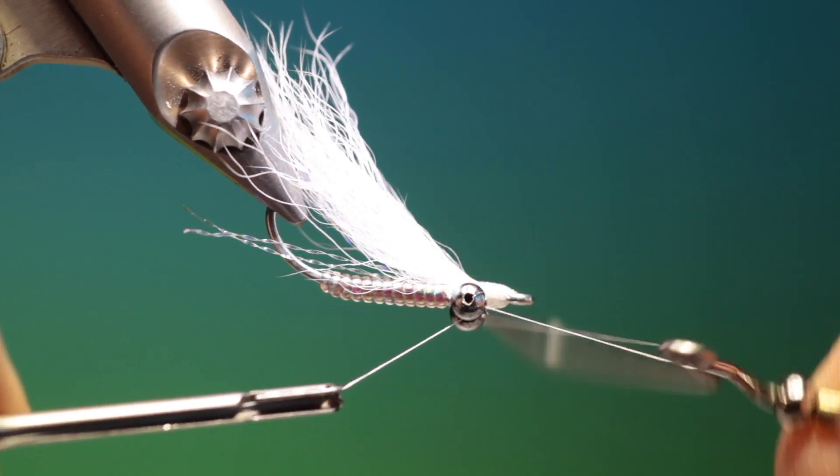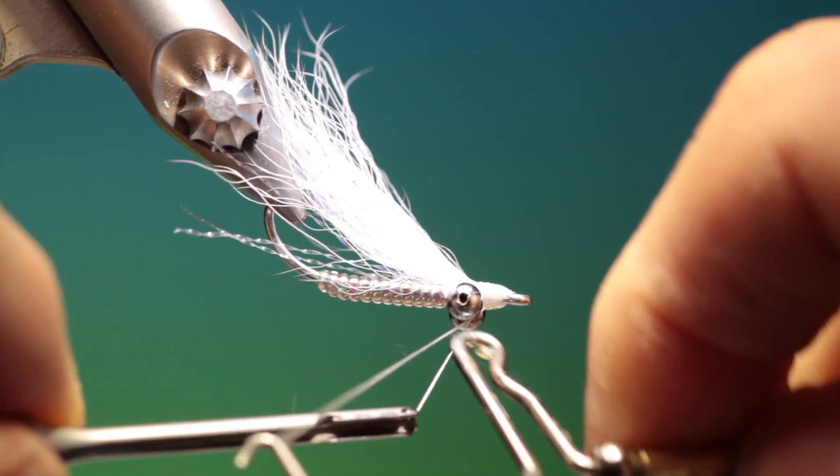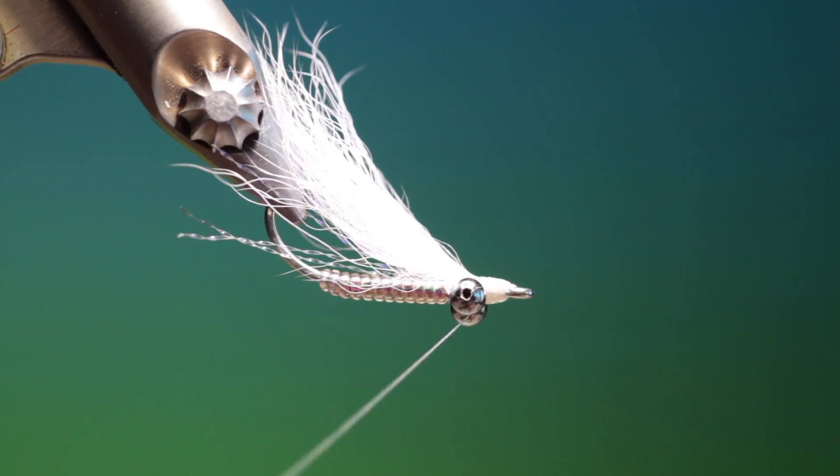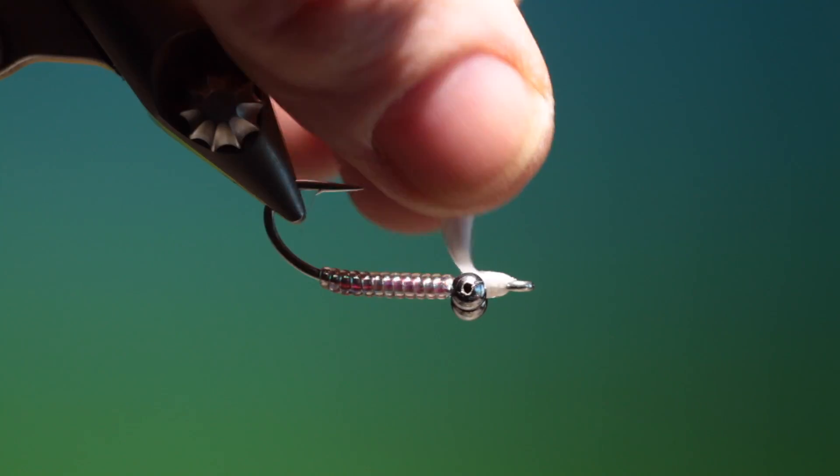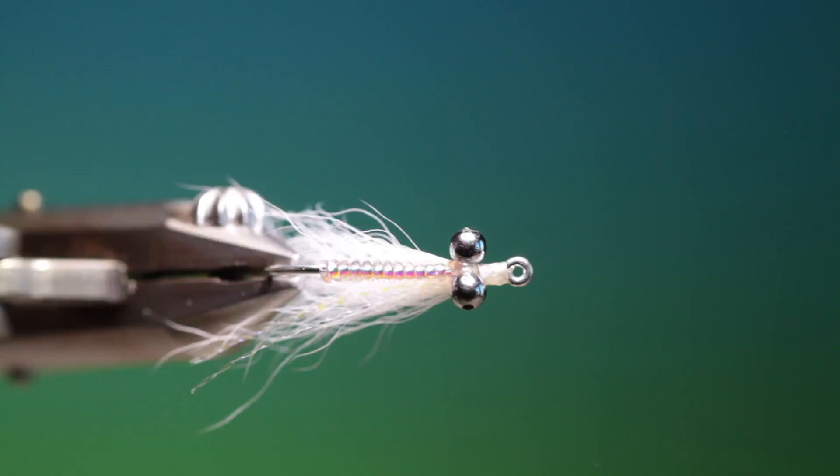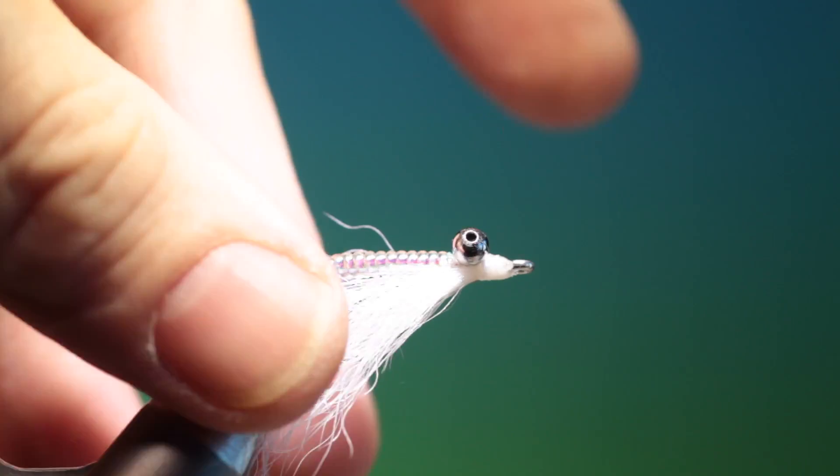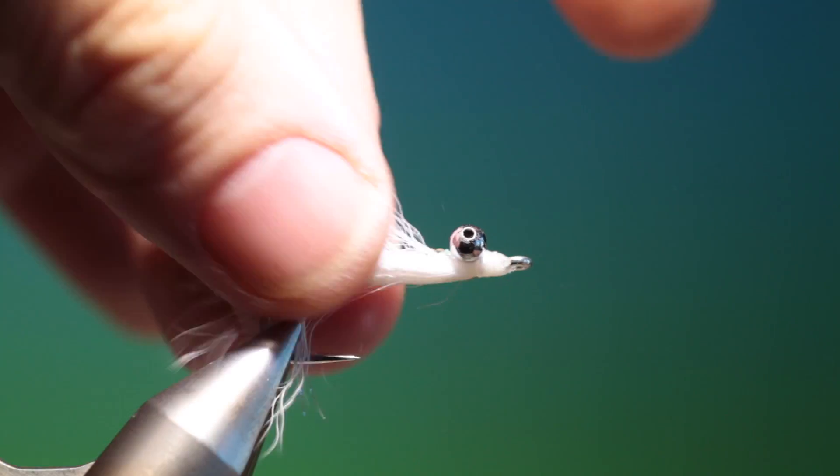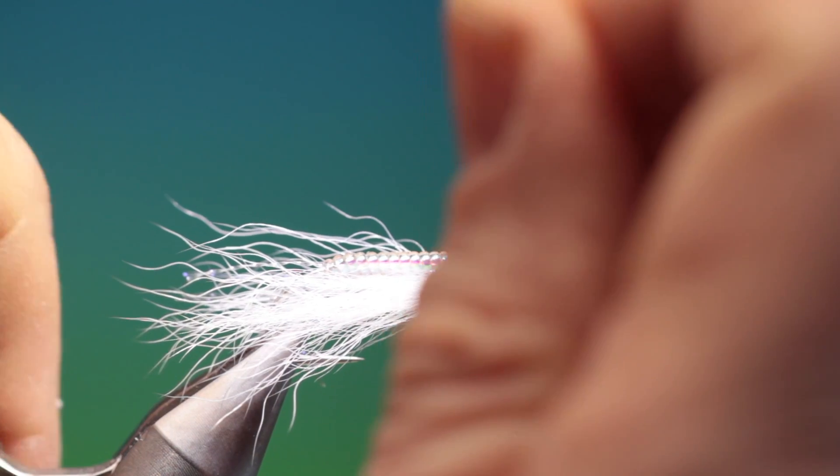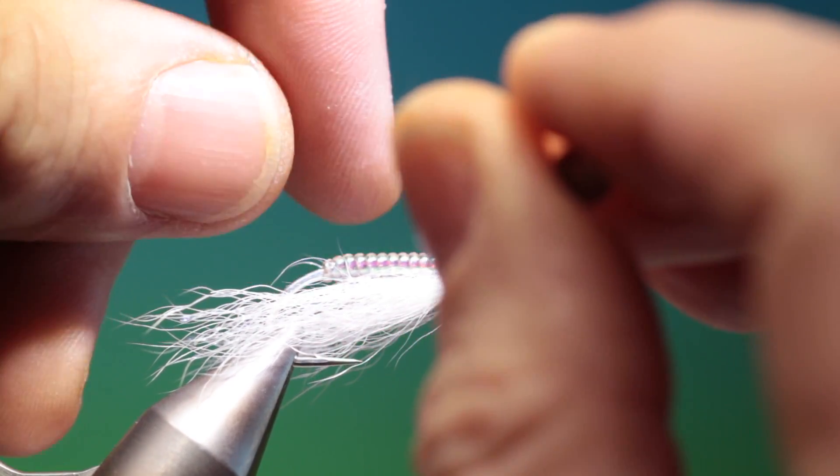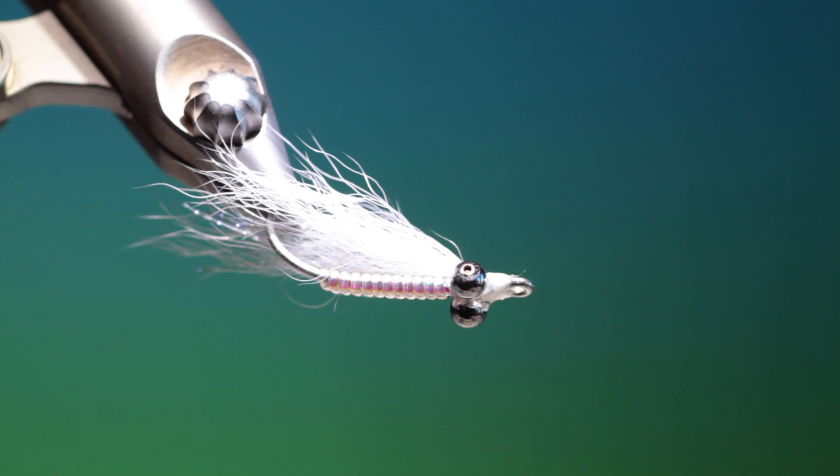Give that a whip finish and one more. You want to make these flies as durable as possible. Just trim that off. Give the head a drop of varnish.